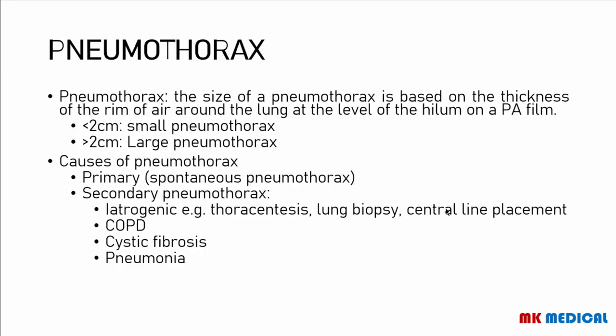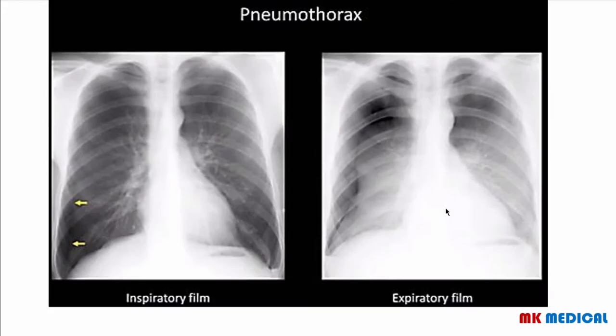We'll begin with talking about a pneumothorax. A pneumothorax is simply air present in the pleural space. The size of the pneumothorax is based on the thickness of the rim of air surrounding the lung, especially at the level of the hilum on the posterior-anterior film. If the size is less than 2 cm, it's a small pneumothorax; if greater than 2 cm, it's a large pneumothorax. Some causes of pneumothoraces: primary causes could be idiopathic — it just happens spontaneously. Secondary causes include iatrogenic causes like thoracocentesis, lung biopsies, and central line placements, chronic obstructive pulmonary disorders, cystic fibrosis, and even pneumonia.